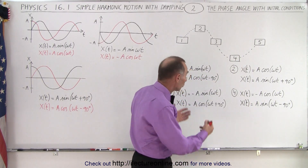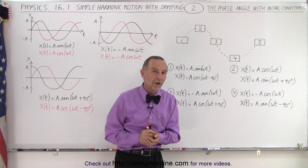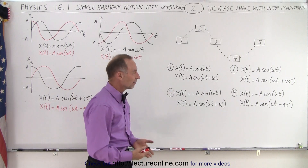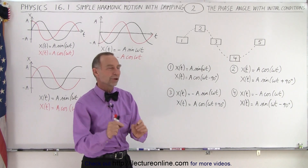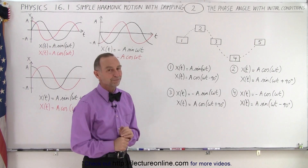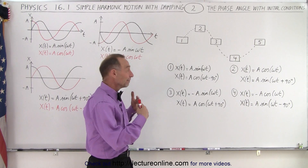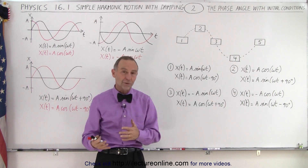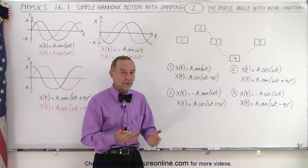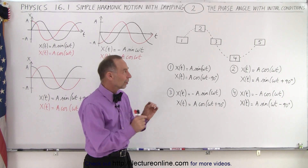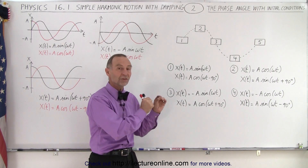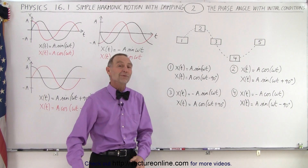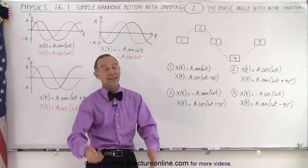You can see that depending upon where you start at time equals zero, you can use a number of sine and cosine functions with phase shifts and negative signs to describe the motion. I hope this video puts you at ease in understanding why sometimes they use a sine and sometimes a cosine, or a sine with a phase angle versus a cosine with a phase angle. It's simply done so we have the correct starting position at time equals zero for that particular motion.